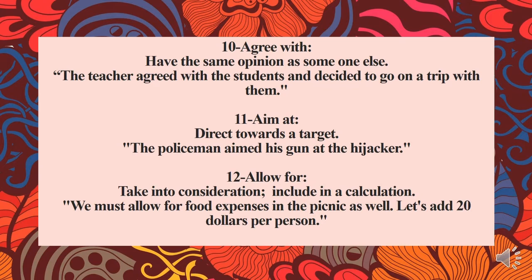The twelfth phrasal verb is 'allow for,' which means to take into consideration or include in a calculation. For example, allowing for food expenses means taking into consideration the food expenses and including them in the calculation — such as adding $20 per person.